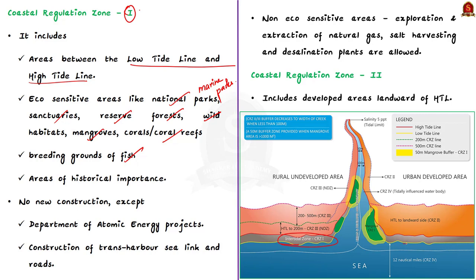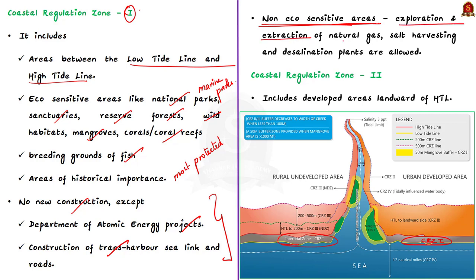All these areas come under CRZ 1 and are the most protected areas. In this zone, no new construction will be permitted except for projects relating to the Department of Atomic Energy and construction of Trans Harbor, Sea Link, and Roads. If an area under CRZ 1 is not an eco-sensitive zone, then exploration and extraction of natural gas, salt harvesting, and desalination plants are also allowed — but only when the area is not an eco-sensitive zone.